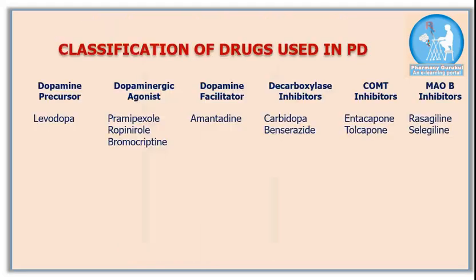The drug classes used in Parkinson's disease are: first, dopamine precursor — levodopa; second, dopaminergic agonists — pramipexole, ropinirole, and bromocriptine; third, dopamine facilitator — amantadine; and fourth, decarboxylase inhibitors — carbidopa and benserazide.